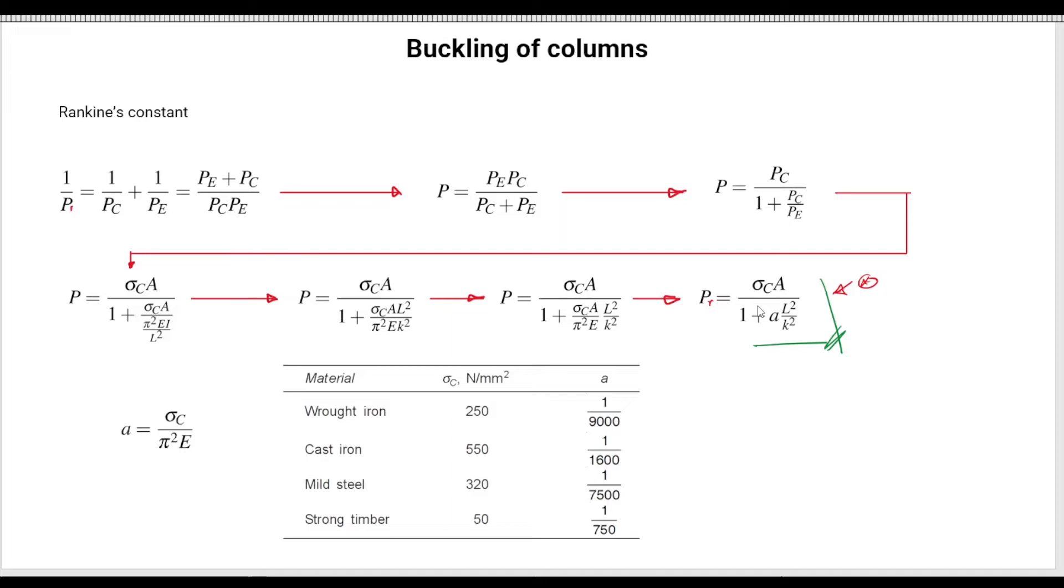This is pretty straightforward, pretty simple. Then what I did here next was, let me graph it, let me plot all these Euler, and let me plot Rankine's to see how they compare one to each other when having the same column and the same material. And this is what you find here.